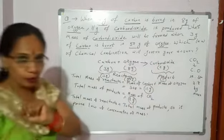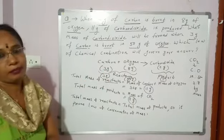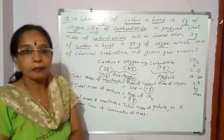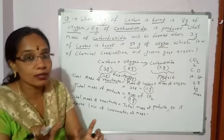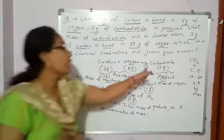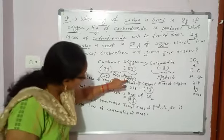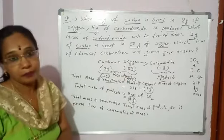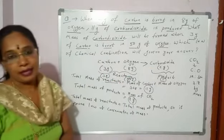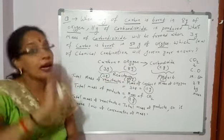So 3 gram of carbon will combine with only 8 gram of oxygen to produce carbon dioxide. Even though it is burnt in 50 gram of oxygen, it will react with only 8 gram of oxygen. So carbon dioxide produced will again be the same — 11 gram. Because to burn 3 gram carbon, only 8 gram of oxygen is required. Out of 50 gram oxygen, only 8 gram is used, and the rest oxygen will remain uncombined — that is 50 minus 8 equals 42 gram of oxygen left uncombined.